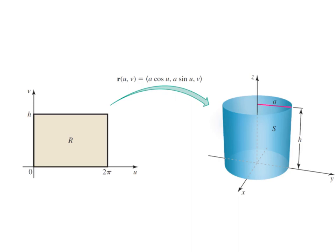The second parametrized surface takes a rectangle in the UV plane. Applying R(U,V) = (A cos U, A sin U, V) generates a cylinder in XYZ space. The U-axis goes from 0 to 2π — moving horizontally along U generates circles — and moving vertically from 0 to H gets us along the Z-axis. The coefficient A is the radius of the cylinder.